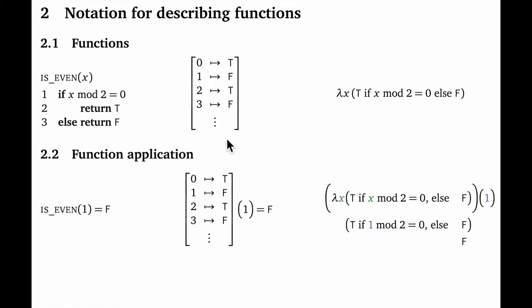On the left, I've got computer code that could do that. The function is called isEven and it uses the mod operator to determine whether the incoming integer x is even or not. In the middle, I've got a different notation that's more explicit: on the left we have the inputs to the function, and the arrow explains how each input is mapped to each output. This is nice and clear, but it has two disadvantages. First, it doesn't explain what the underlying concept is — you have to infer what's being computed from the input-output pairs. And second, I can't actually write down all these pairs because it's an infinite set.